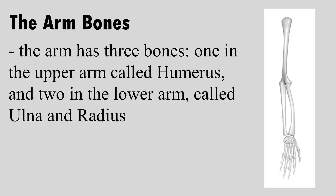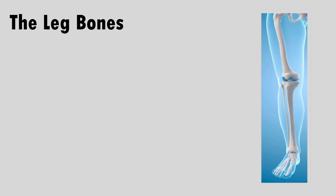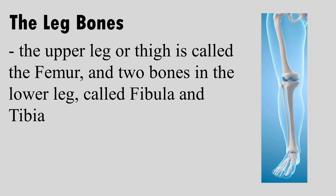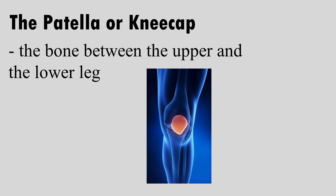The arm has three bones: one in the upper arm called the humerus, and two in the lower arm called the ulna and radius. The upper leg or thigh bone is called the femur, and there are two bones in the lower leg called the fibula and tibia. The patella or kneecap is the bone between the upper and lower leg.